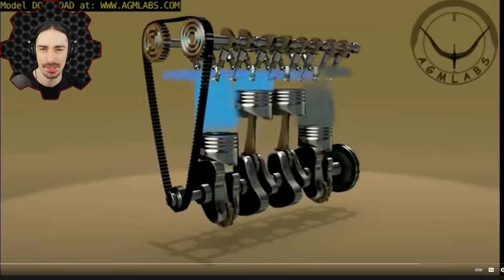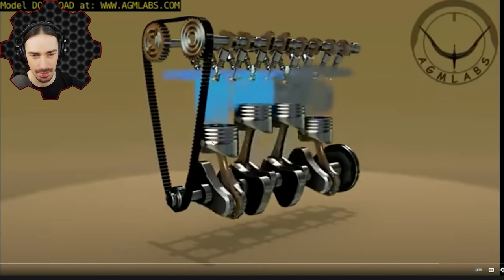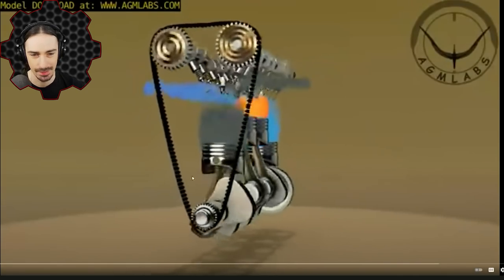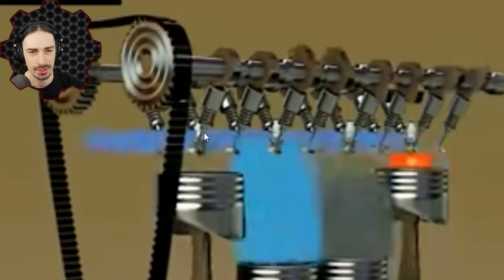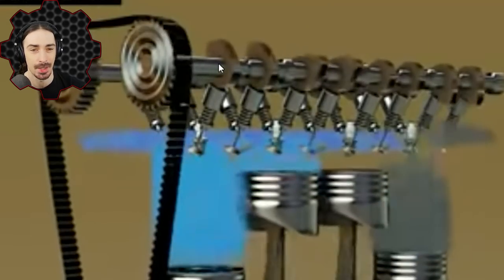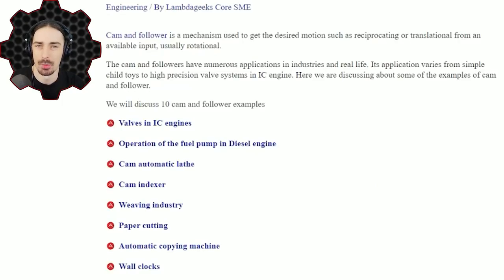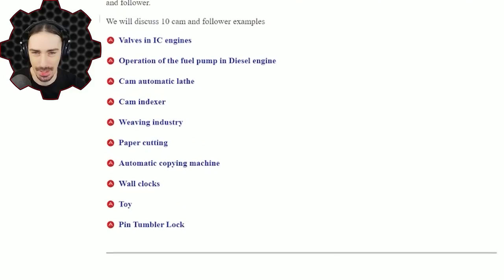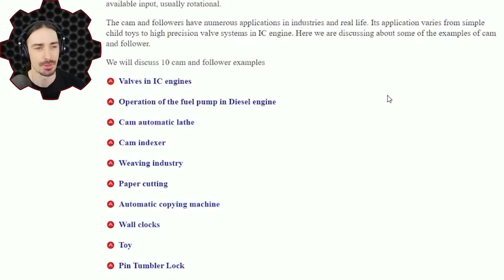If you're wondering how this applies to engines, here is an example of an internal combustion engine. Although the pistons are also converted into linear motion from rotary motion, that isn't the cam and follower mechanism we're focusing on. It's actually the valves up here that are opened and closed with a cam and follower mechanism using the same shape we saw earlier. Cam and followers also appear in fuel pumps, diesel engines, automatic lathes, indexers, weaving machines, paper cutting, wall clocks, toys, and tumbler locks.